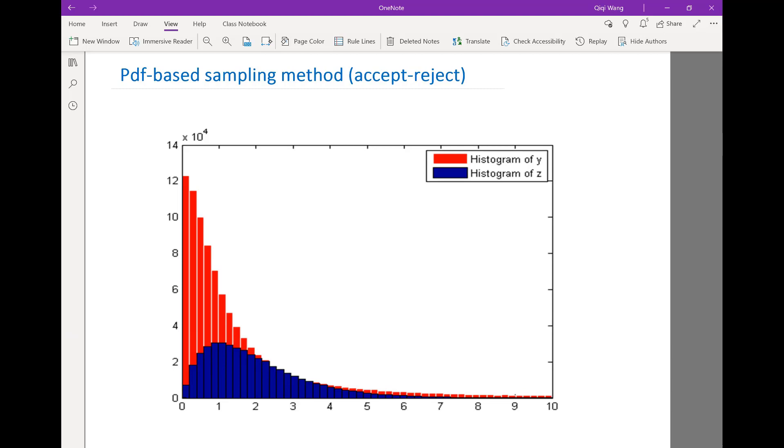However, if the blue distribution also does not have an easy to compute CDF function, so for example, if we know the PDF only, we don't know the CDF and the integral of the PDF to get the CDF is very difficult, or even if we can compute the CDF, the inverse of the function is very difficult to compute, then we also cannot use the inverse CDF method.